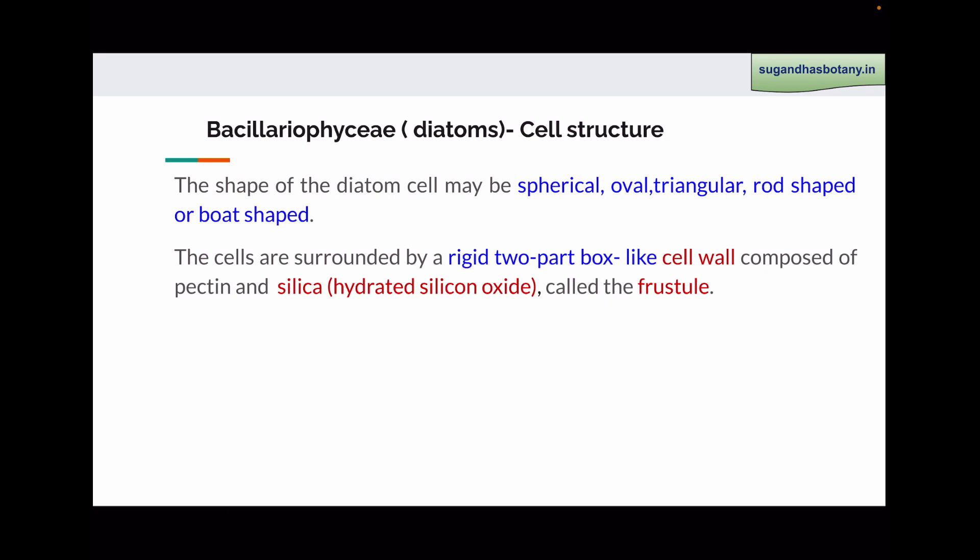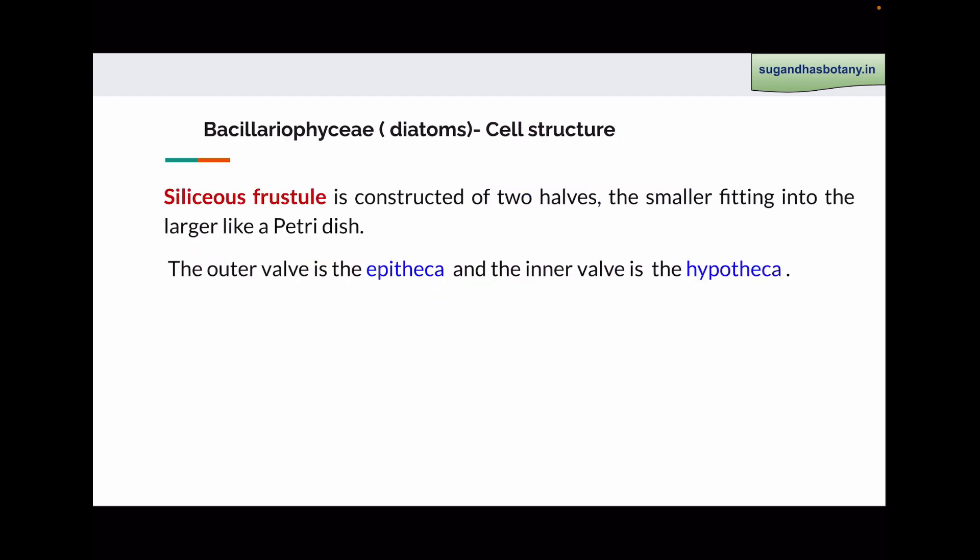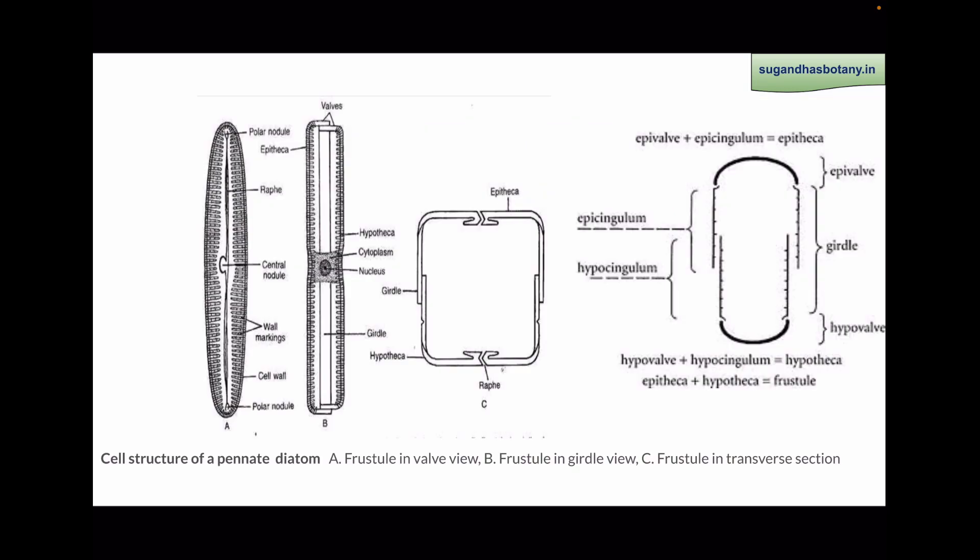The pectin is impregnated with silica, which is present in the form of hydrated silicon oxide. The cell wall of diatoms is called frustule. Diatoms have a siliceous frustule in which silica is deposited. The siliceous frustule is constructed of two halves: the outer or larger half is known as epitheca, and the inner smaller half is known as hypotheca. Hypotheca is fitted inside the epitheca just like a petri dish. The pinnate diatoms have a median raphe or slit which helps in gliding movement. Raphe is divided into two parts due to the presence of a central nodule. At the two poles of the cells, two polar nodules are present. The cell wall also shows some striations or wall markings.